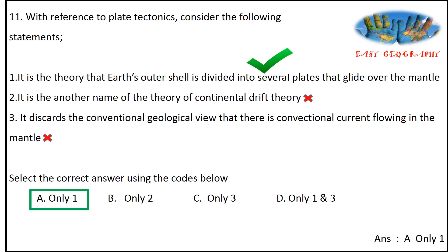With reference to plate tectonics, consider: Statement 1 — Earth's outer shell is divided into several plates that move over the mantle; Statement 2 — it is another name for the theory of continental drift; Statement 3 — it discards the view that convectional currents flow in the mantle. Answer is Option A: first statement only. The plate tectonic theory was developed by W.J. Morgan, describing six major plates and twenty minor plates moving over the mantle. It is related to but not the same as continental drift, and convectional currents in the mantle are not discarded.